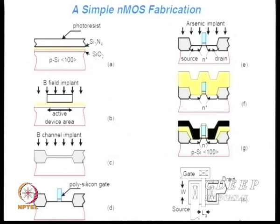Further boron implants are done after additional etching and an oxidation step. Polysilicon is deposited everywhere, then only a specific part is retained by masking and etching — this becomes the polygate. Then arsenic is implanted to make N+ drain and source regions.